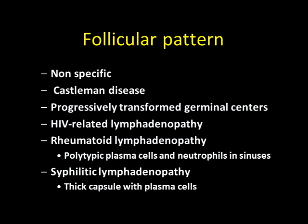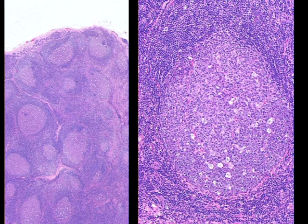The follicular pattern is seen in many conditions: Castleman's disease, HIV-related lymphadenopathy, and rheumatoid lymphadenopathy — where in addition to reactive follicles we see polytypic plasma cells and neutrophils mostly in the sinuses. In long-standing syphilis involving a lymph node, we see plasma cells in relation to a very thickened capsule, and we can perform Warthin-Starry stains to find the organisms. In reactive follicular hyperplasia, the follicles are no longer just at the outer cortex but throughout the lymph node, with a light and dark zone, tangible-body macrophages, and a surrounding mantle zone.